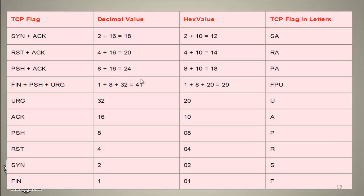For the Reset and ACK flag combination, the decimal equivalent is 20 and the hexadecimal equivalent is 14, represented in letters as 'RA.' For the Push and ACK flag combination, we use 'PA.' For the FIN, Push, and Urgent flag combination, we use 'FPU' — a combination of three TCP flags. For the single Urgent flag alone, the decimal equivalent is 32 and hexadecimal is 20, represented as 'U.' We will make use of all this when we start scripting our port scanner in this section.